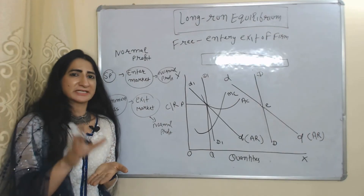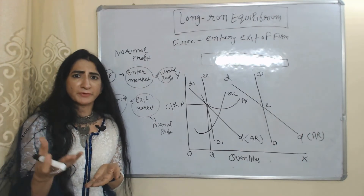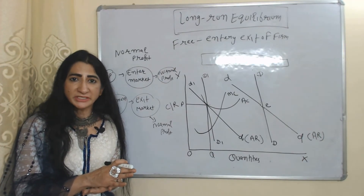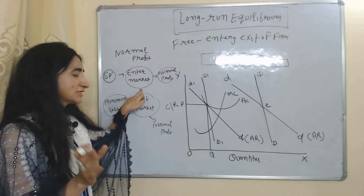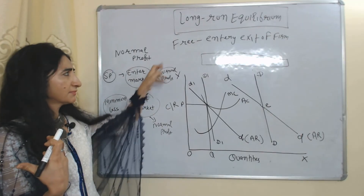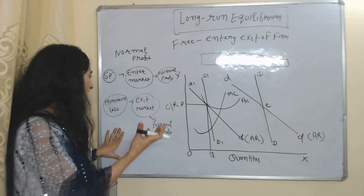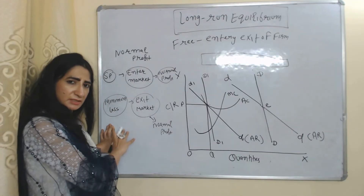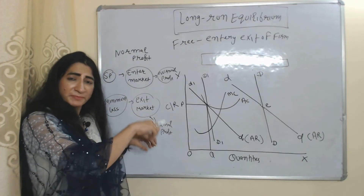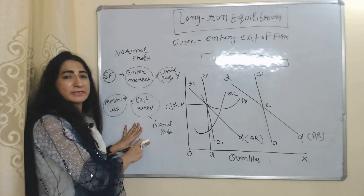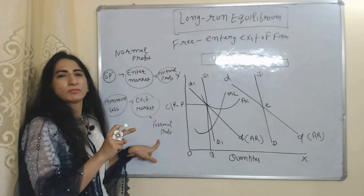Now we look at long run equilibrium under the assumption of free entry and exit of firms. At short run, monopolistic competition firms can earn supernormal profit, normal profit, or minimum loss. But at long run, monopolistic competition firms will always get normal profit. If firms are earning supernormal profit at short run, other firms enter the market due to free entry. As more firms enter, profits of all existing firms are divided until they reach normal profit. Conversely, if firms are making minimum losses, some firms exit, and the remaining firms' profits increase back to normal profit.